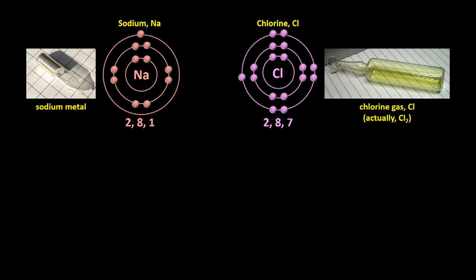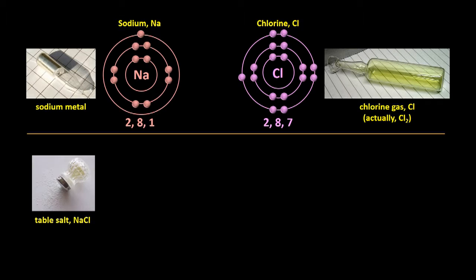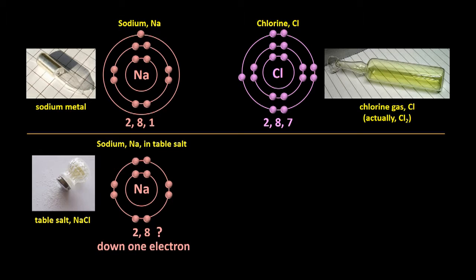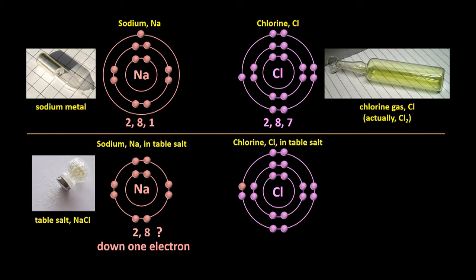In the early 1920s, Bragg conducted more experiments on NaCl, and found that the electron configuration for the sodium atoms in NaCl may actually be 2,8. In other words, they were all down one electron, and that the electron configuration of the chlorine atoms in NaCl may have been 2,8,8, or in other words, they were all up one electron. Further testing confirmed this to be the case.